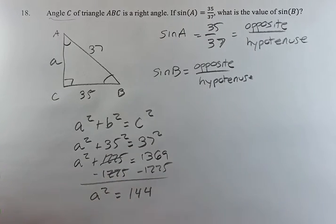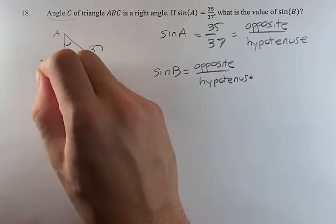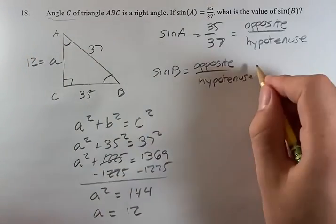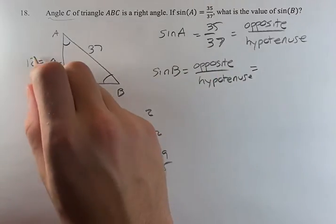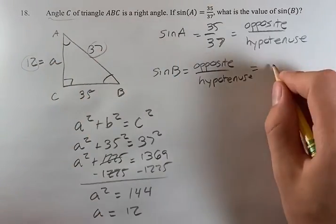A squared equals 144, which means a equals 12. This means that sine B is the opposite over the hypotenuse, which is 12 over 37, and that's our answer.